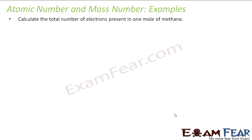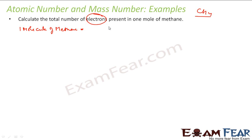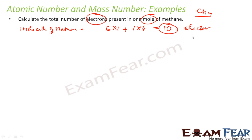We need to find the number of electrons in one mole of methane. One molecule of methane — methane is CH4 — so carbon has 6 electrons and each hydrogen has 1 electron, and there are 4 hydrogens. Therefore, one molecule of methane has 10 electrons.